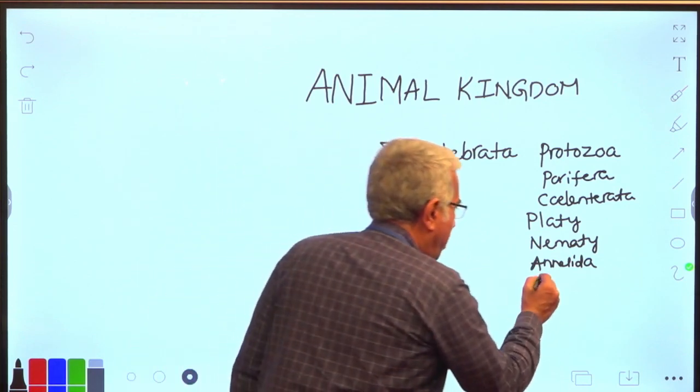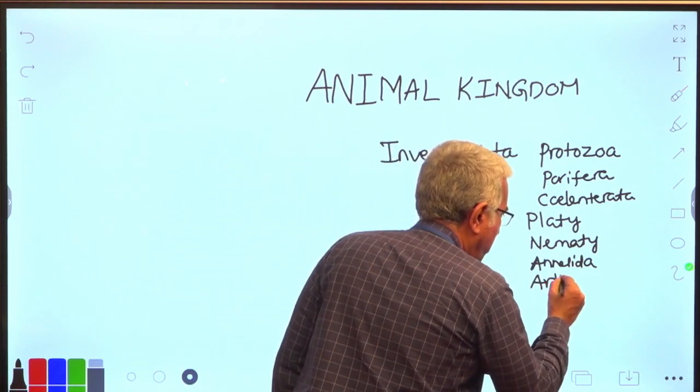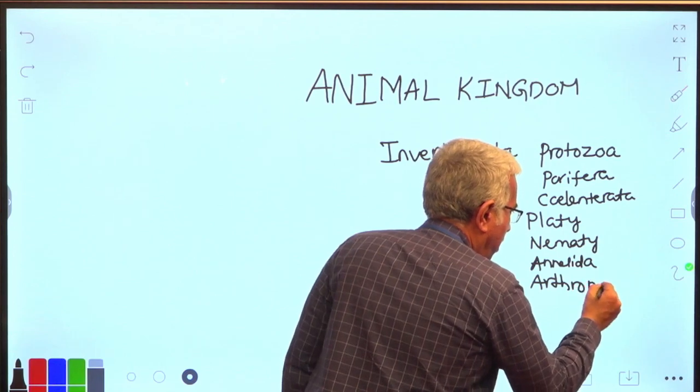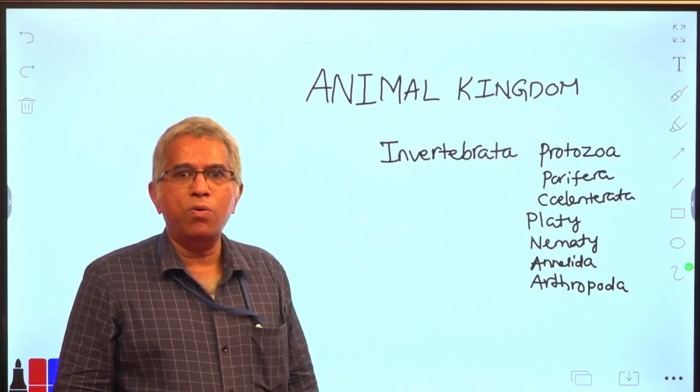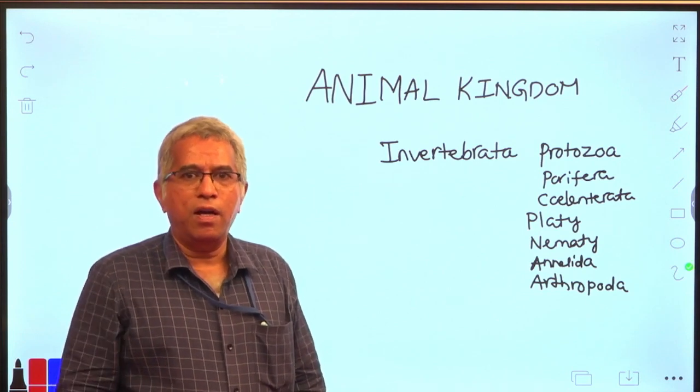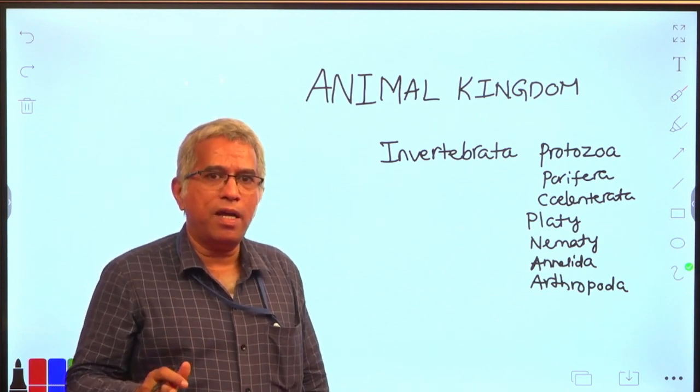It is followed by arthropoda. This is the biggest phylum in animal kingdom. It includes insects also, and insecta is the biggest class in the animal kingdom.